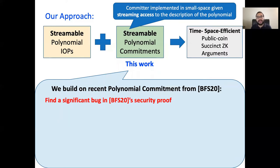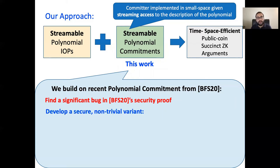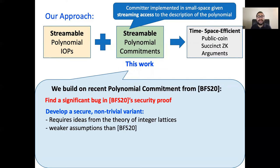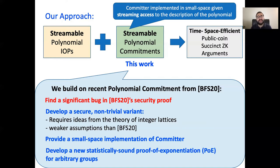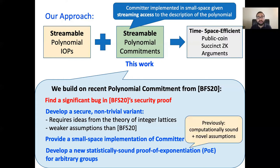More specifically, we build on a recent polynomial commitment scheme due to Bunz, Fish, and Sepinic. In fact, we find a significant bug in their scheme — the authors informed us that they also found this bug independently. Although we don't know how to fix this bug, we give a non-trivial variant of their protocol where to prove security, we leverage ideas from the theory of integer lattices. An added benefit of our protocol is that it's based on significantly weaker assumptions than the work of Bunz et al. Additionally, we show how to implement the committer of our scheme in small space given streaming access to the polynomial.